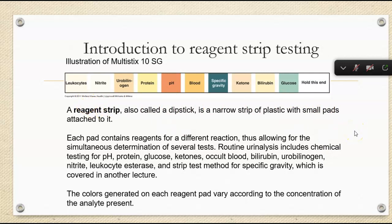We can test all of these analytes all at once, looking at pH, protein, glucose, ketones, blood, bilirubin, urobilinogen, nitrate, leukocyte esterase or white blood cells, and specific gravity. The colors generated will vary according to the concentration of the analyte, and some test strips can vary a tiny bit, so you need to make sure you're reading the strip based off of the correct reagent bottle.